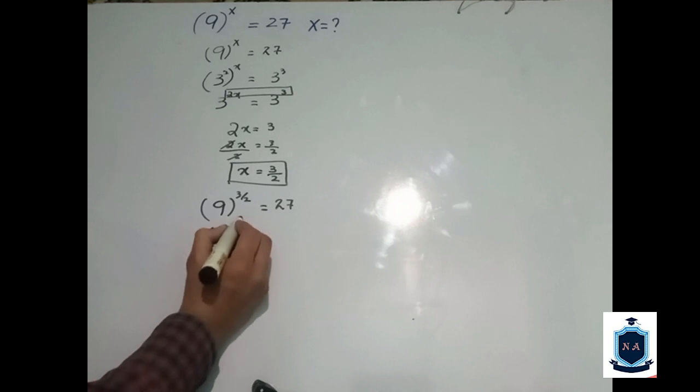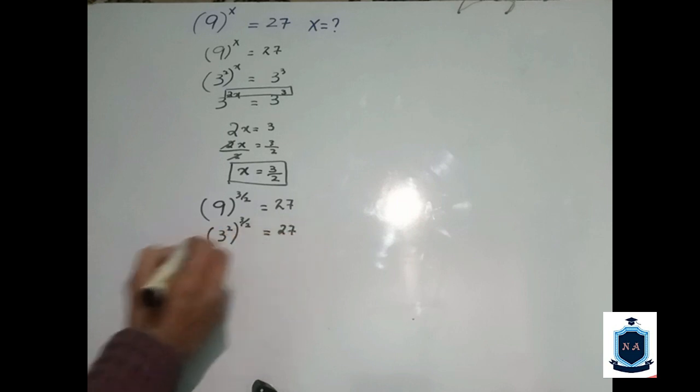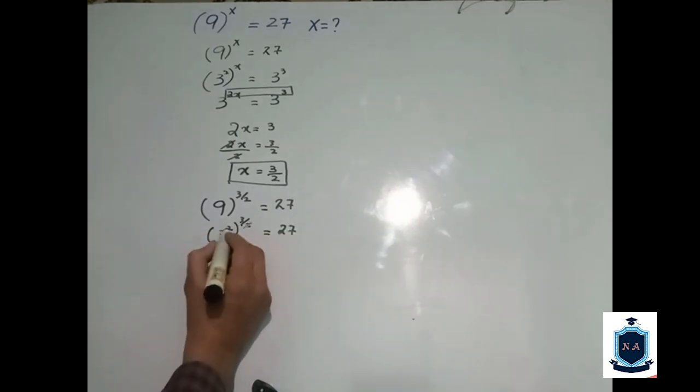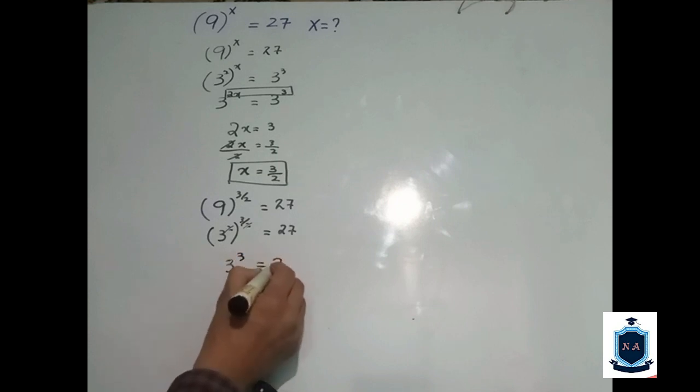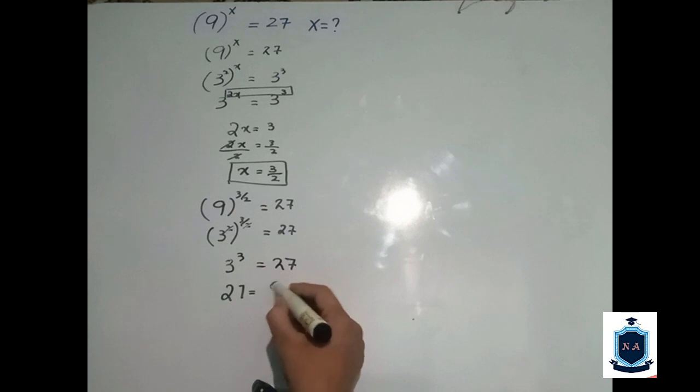Then 2 is cancelled out. 3 power is 3 equal to 27. Then 3 power is 3 equal to 27, which means 27 equal to 27.